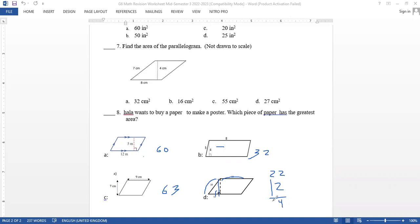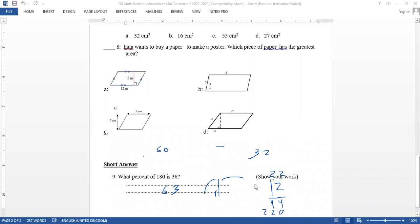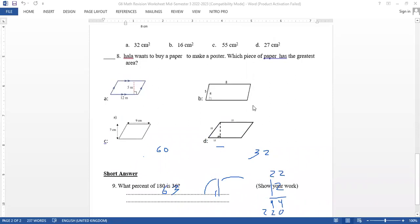12 multiply 22: 2 multiply 2 is 4, 2 multiply 2 is 4, add a zero here, 1 times 2 is 2, 1 times 2 is 2. Now I add: 44 plus 0 is 44, 4 plus 2 is 6, equals 264. Obviously it's the greatest one.